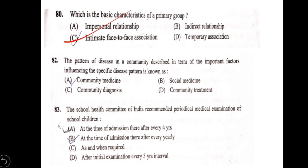The pattern of disease in a community, describing the important factors influencing the specific disease pattern, is known as — options: A) community medicine; B) community diagnosis; C) social medicine; D) community treatment. The answer is community diagnosis, option B.